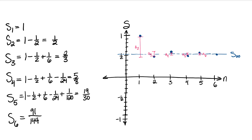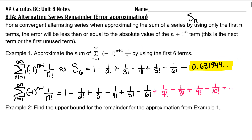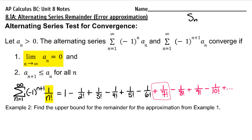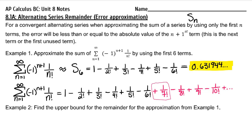So if we have approximated with 6 terms, the greatest distance between the sixth partial sum and the actual sum is going to be the next term, a sub 7, the first unused term. The sixth partial sum will not be more off from the actual sum than the first unused term. Notice that our first unused term is the largest amongst all of the unused terms. The limit of the non-alternating part, or a sub n, must equal 0 for an alternating series to converge. Therefore, the first unused term is the largest of all unused terms, and since each term gets us closer to our sum, the error would be our first unused term. That makes our alternating series remainder less than or equal to the first unused term.